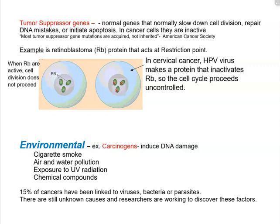When retinoblastoma proteins are active, cell division does not proceed — it binds to the transcription factor E2F, preventing transcription of genes that initiate DNA synthesis. But if a person is infected with HPV virus, the virus produces a protein that inactivates retinoblastoma. Therefore, the cell cycle proceeds uncontrollably and cells divide without regulation.